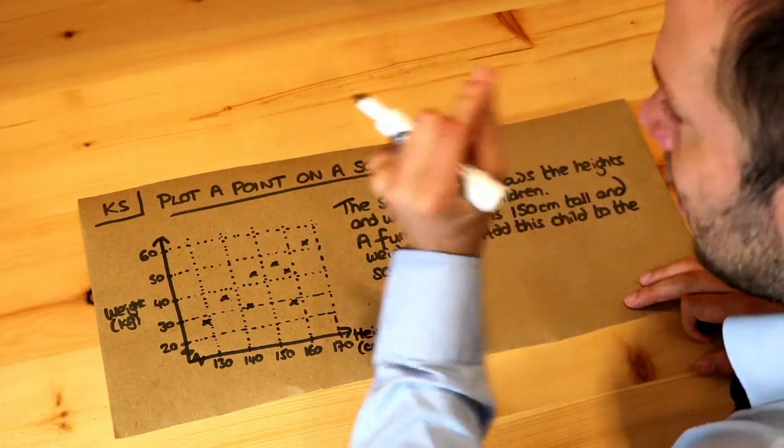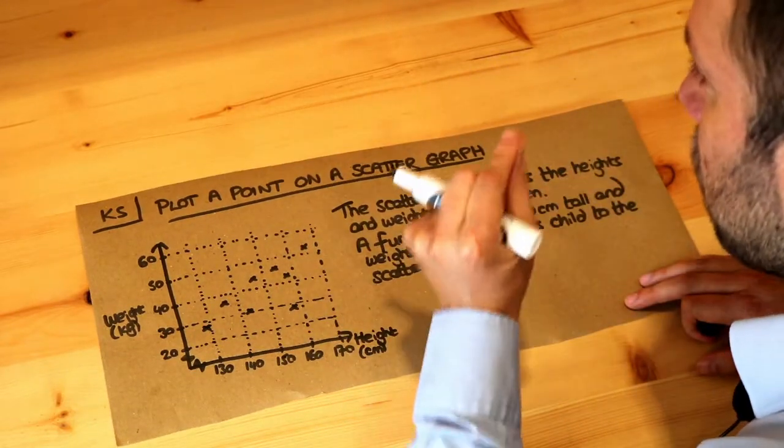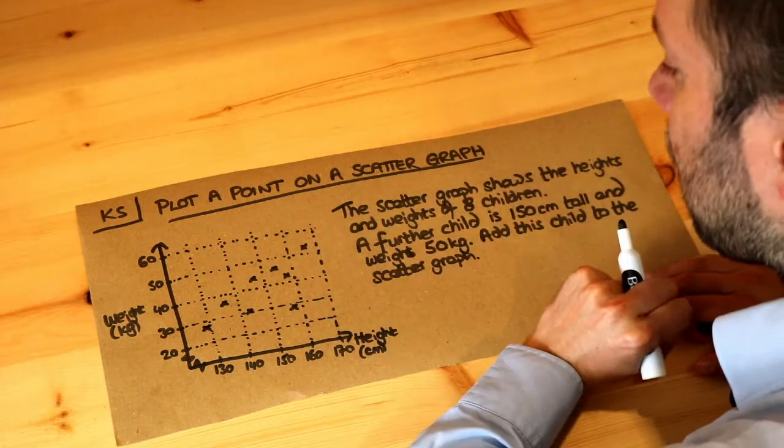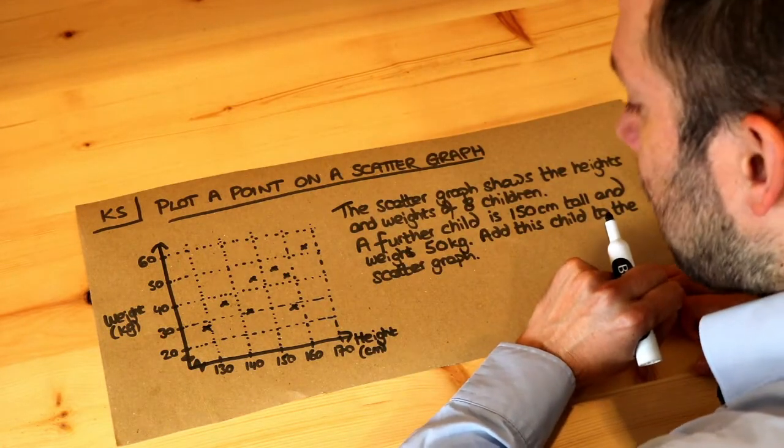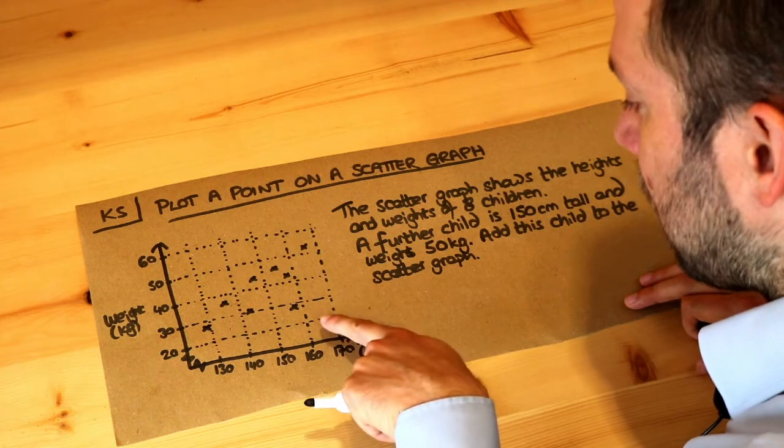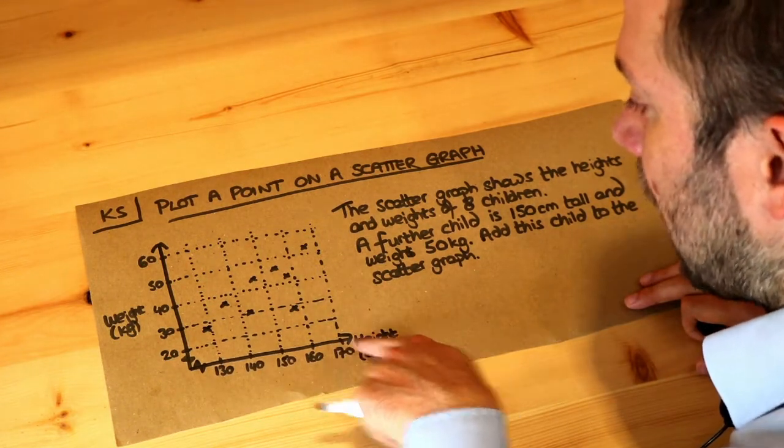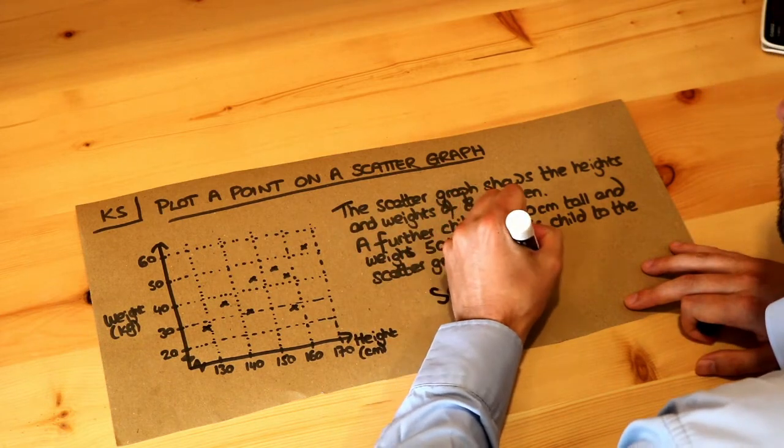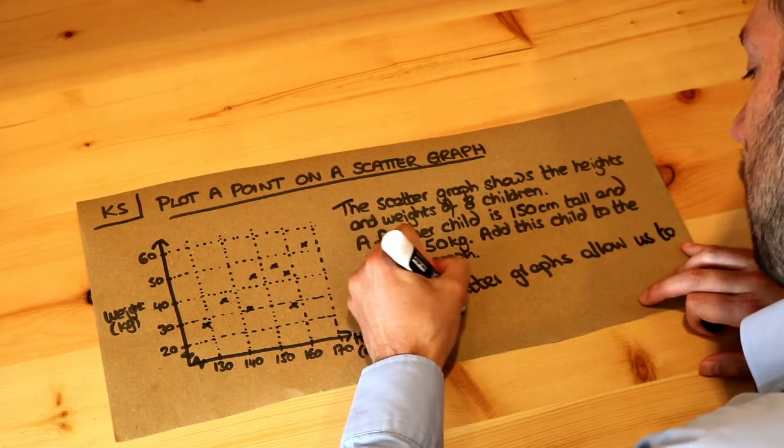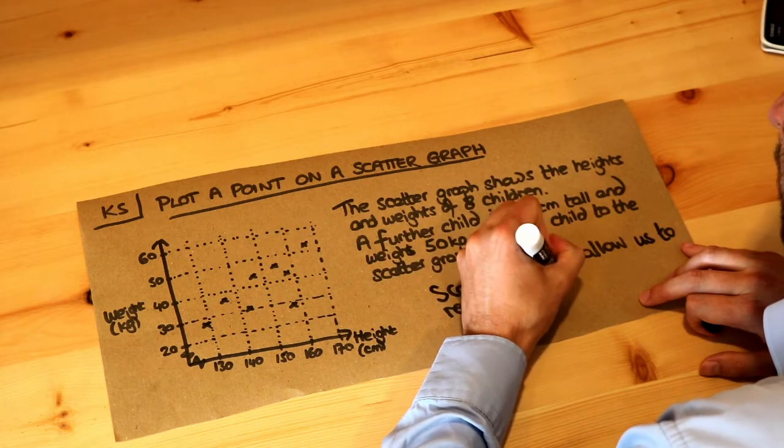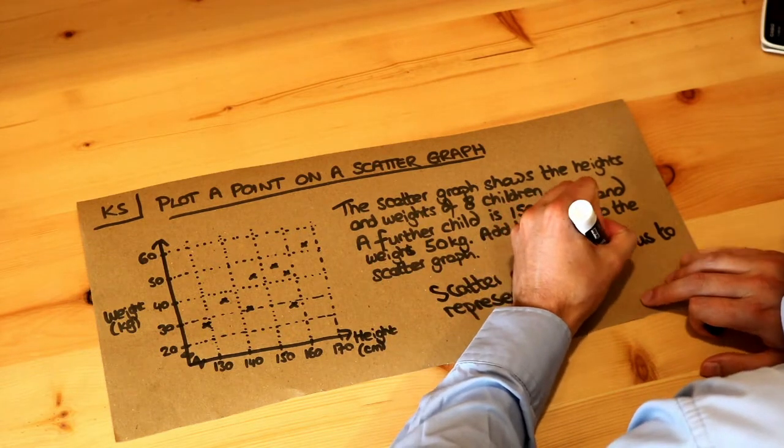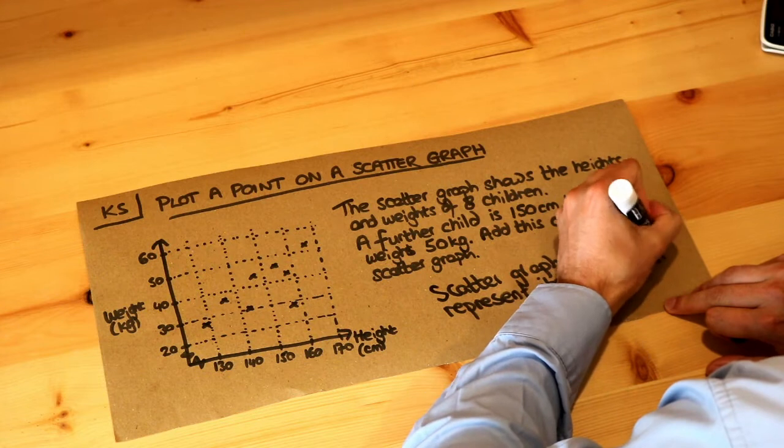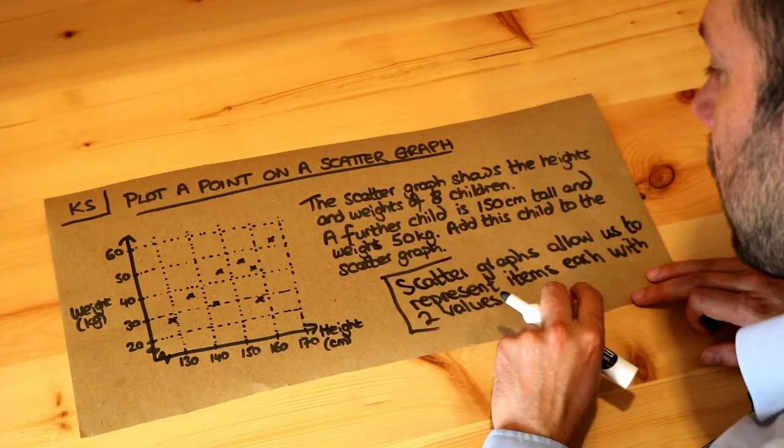But each of those data points, each of those children, has two values associated with them. In this particular case we've got two values associated with each of these children: a height and a weight. So let me write that down. Scatter graphs allow us to represent items, it could be children, each with two values.